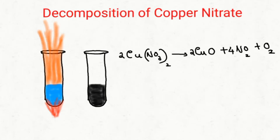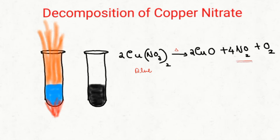In the same way, they will be asking what will be the observation of the reaction when copper nitrate is heated. First of all, what will be the color of copper nitrate? As you can see in the picture, copper nitrate is blue in color. Whenever copper nitrate is heated, it will undergo decomposition reaction and you can see that a reddish brown gas is evolving out of the test tube — that is nothing but nitrogen dioxide.